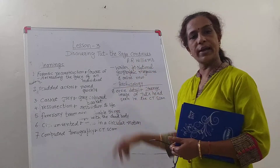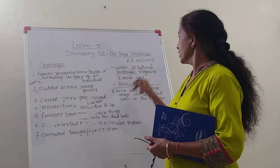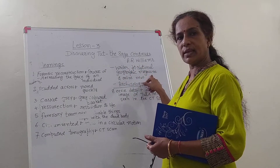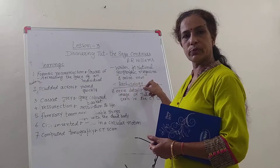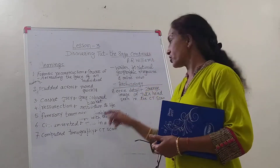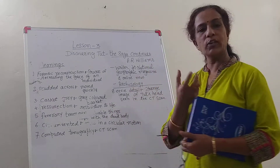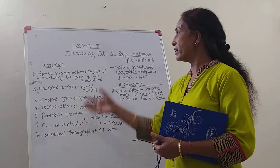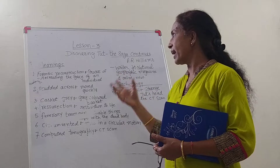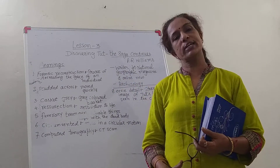A.R. Williams is the writer of this literary section. She was a writer for the National Geographic magazine as well as for online news. Apart from being a writer, she was an archaeologist also, and that is why this is a discovery title she has given, as people are trying to discover the mystery of Tut's death.